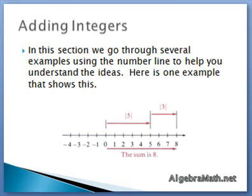In this section, we're going to go through several examples using the number line to help you understand the ideas. Here's one example that comes directly from the book. Here we added five and three. Notice the distance starts off at zero, goes over five units, so its value is the absolute value of five.